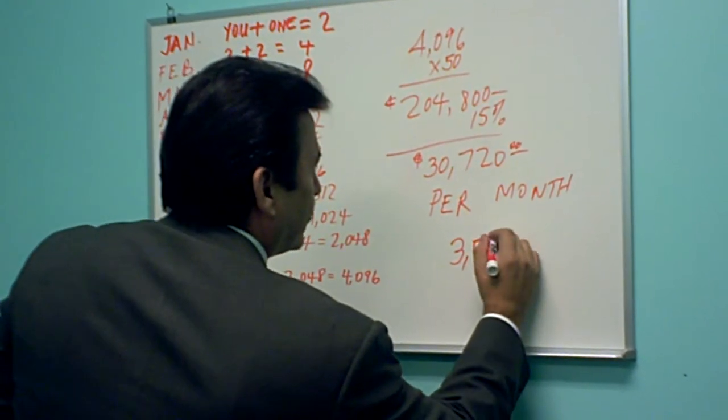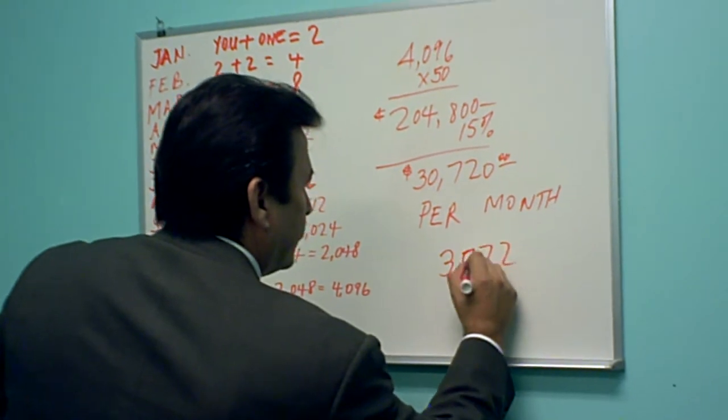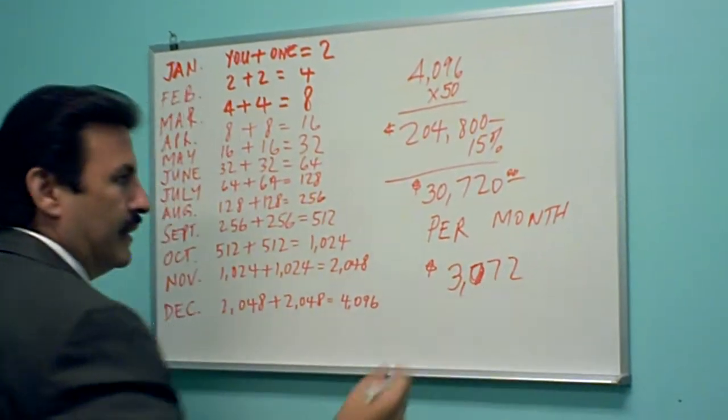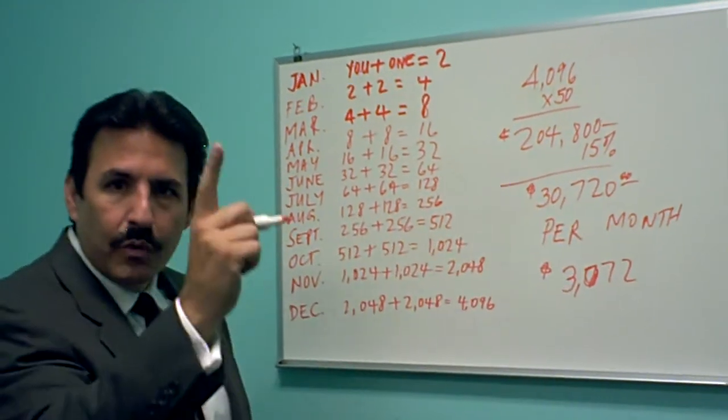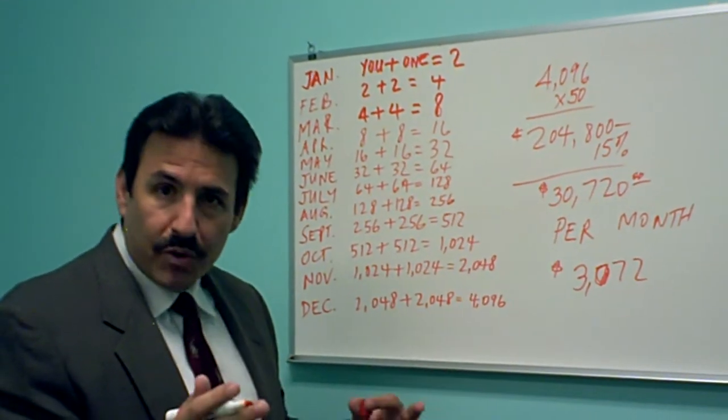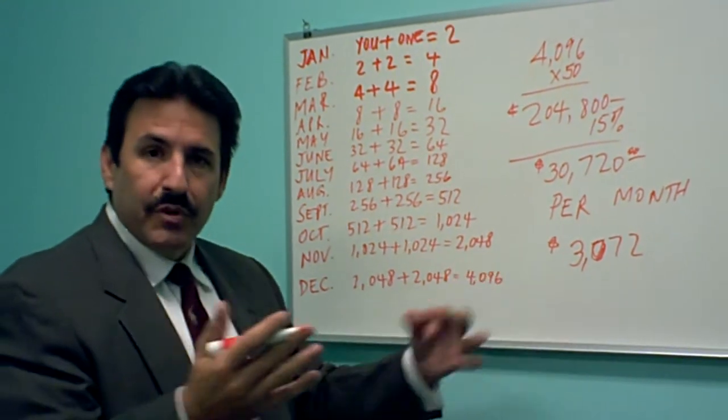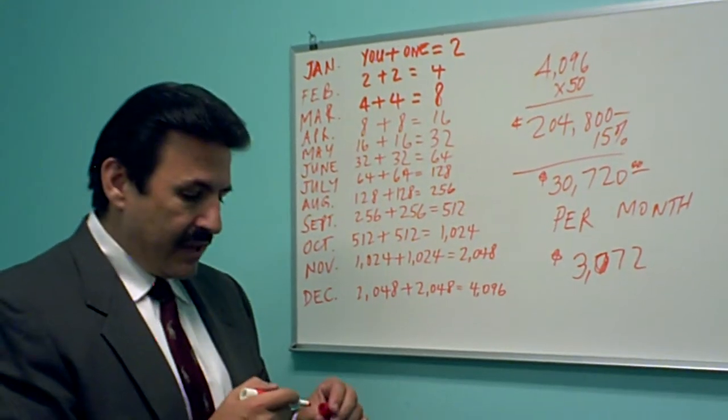$3,072. If that's something that would help you out, anywhere between here and here by bringing in only one person. If you can bring in more than one person, if the people you're bringing in can bring in more than one person, you're going to have a hell of a lot more than that.